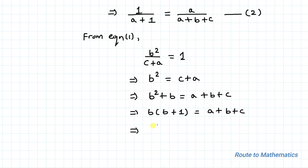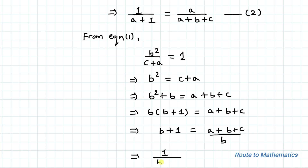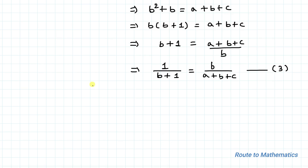This implies b+1 equals (a+b+c) divided by b. By taking the reciprocal of both sides, we have 1 divided by (b+1) equals b divided by (a+b+c). Let's take this as equation 3.